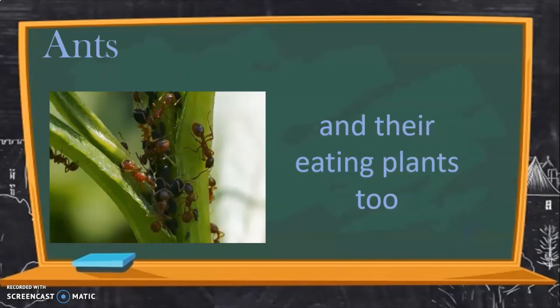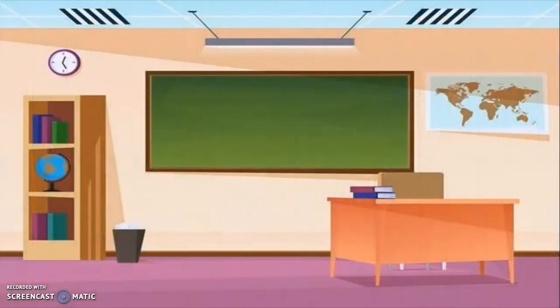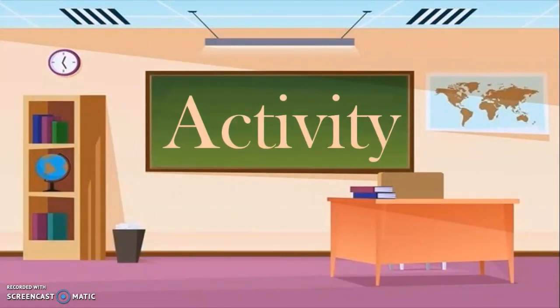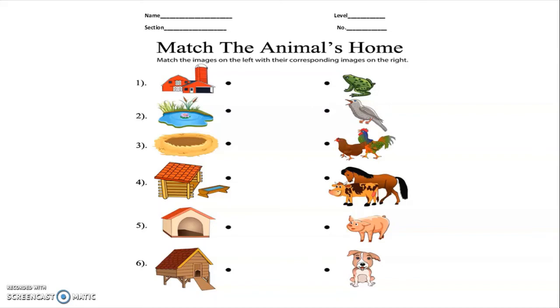Did you follow? Alright. So that's the end of our topic and now the activity. Again, don't forget to write your name at the top. Follow the section, level, and number. Match the animal's home. Match the image on the left with the corresponding image on the right. Did you follow? Alright, for example.